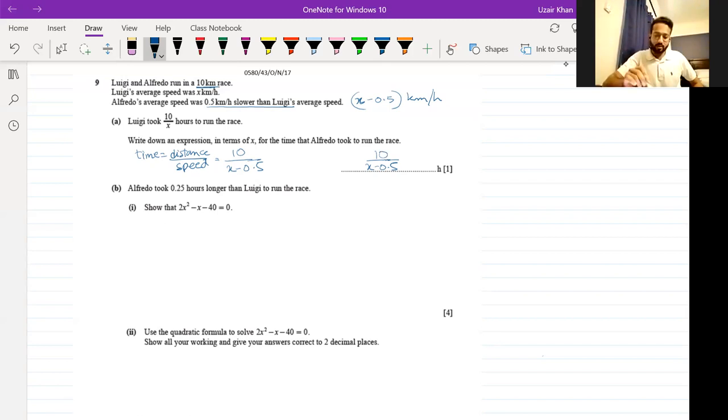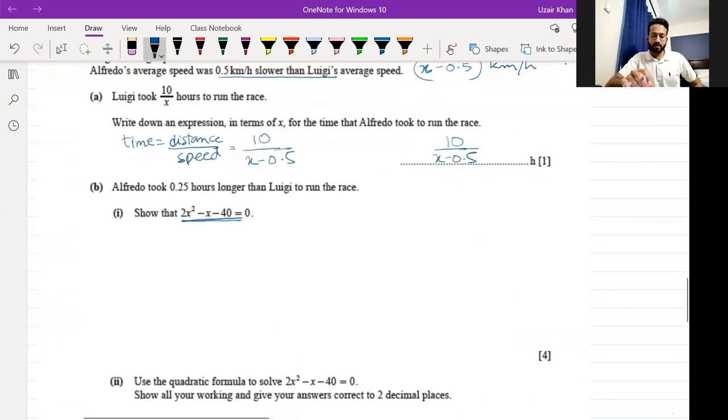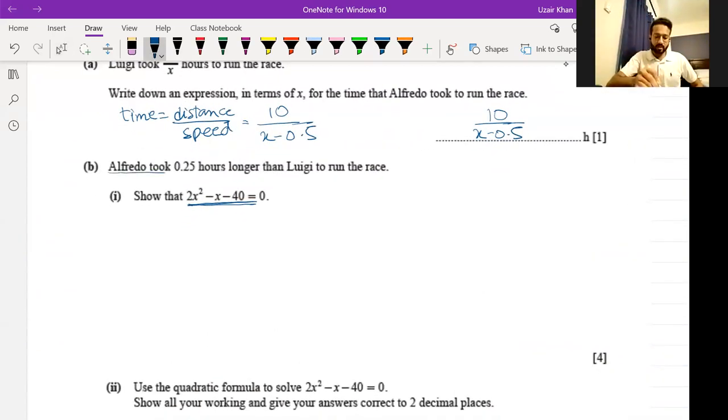Part B says Alfredo took 0.25 hours longer than Luigi to run the race. Show that the equation that results from the statement reduces to 2x squared minus x minus 40 equals 0. We need to translate this statement into math. Alfredo's time was 10 upon x minus 0.5, which is 0.25 hours longer than Luigi, which is 10 upon x. Let's take the LCM.